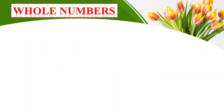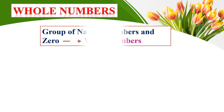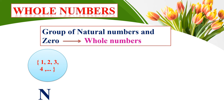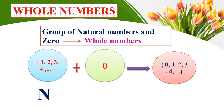First we are going to learn whole numbers. What are whole numbers? The group of natural numbers and zero is called whole numbers. Natural numbers start with one, two, three, four, and so on — indicated as N. When we add zero to natural numbers, we get the set of zero, one, two, three, four, and so on. This is called whole numbers.